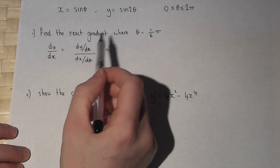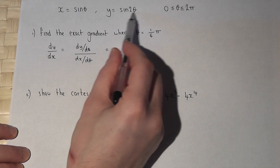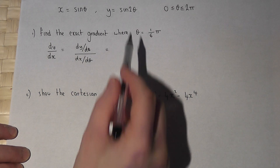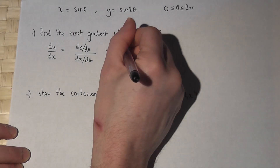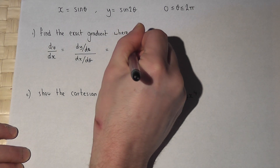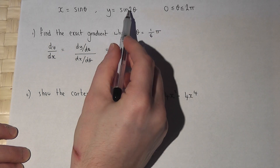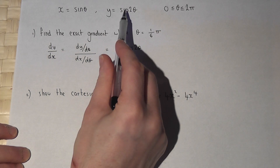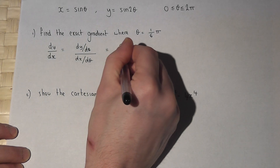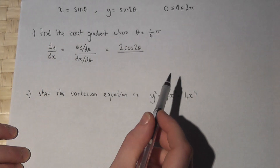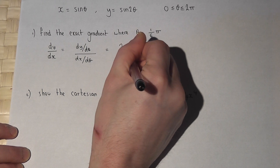Now, dy by d theta means y differentiated with respect to theta. Sine 2 theta differentiates to 2 cos 2 theta — we multiply by the 2 and sine differentiates to cos. And dx by d theta: sine theta differentiates to cos theta.